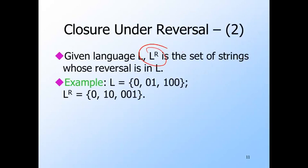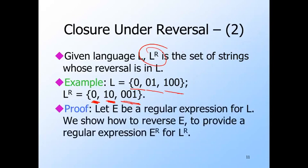Here's a simple example. L has three strings: 0, 01, and 10. L reversed is the reversal of each of these strings. 0 reversed is still 0, while 01 reversed is 10, and 10 reversed is 01. To begin the proof that regular languages are closed under reversal, we start with a regular expression for a regular language L. We'll show by an induction on the number of operators in the regular expression that there is a regular expression for the reverse of L.